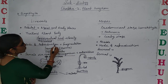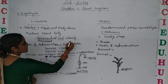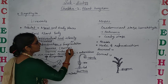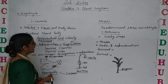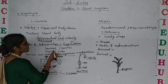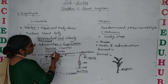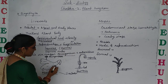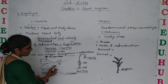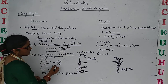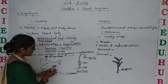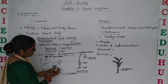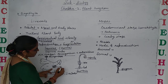Now the mode of reproduction: asexual reproduction takes place through fragmentation. Asexual reproduction also takes place through gemmae — singular is gemma — and they are inside the gemmae cups. Gemmae cups are attached to the leafy portion of the thallus, and they have small thread-like structures which are known as rhizoids.